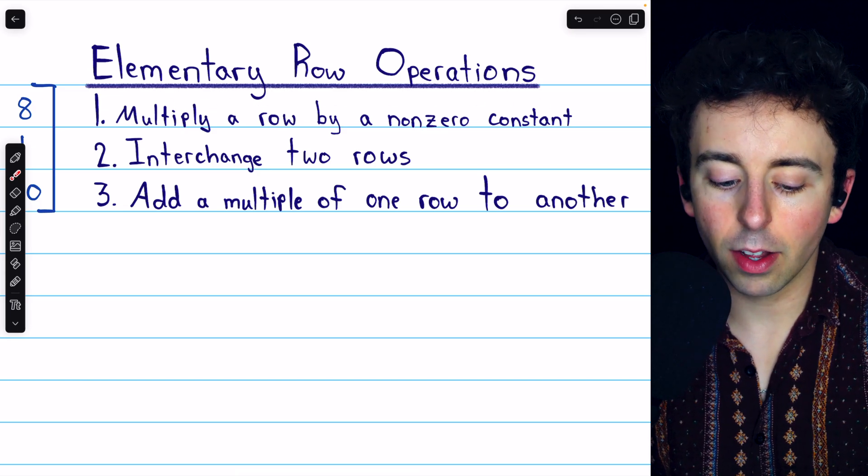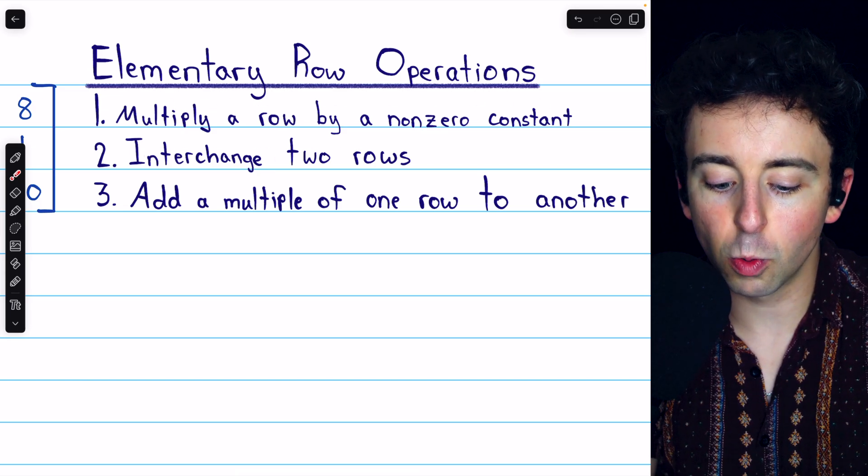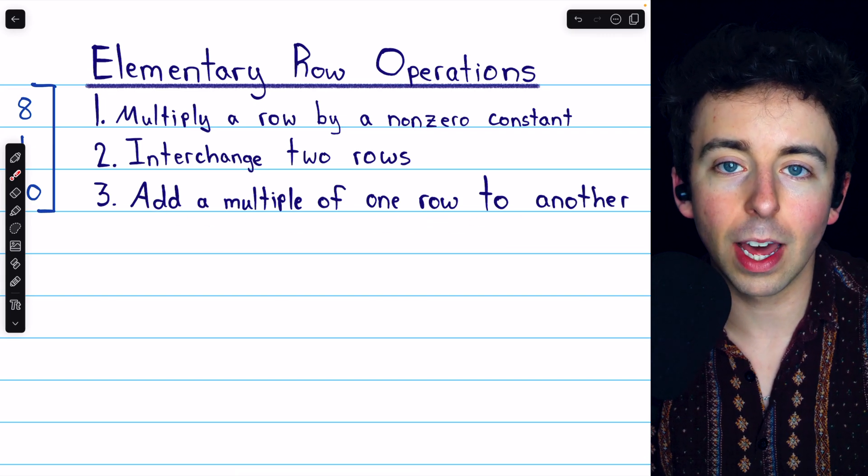We can multiply a row by a non-zero constant, interchange two rows, and add a multiple of one row to another.